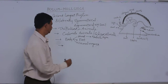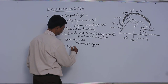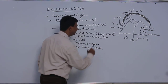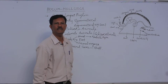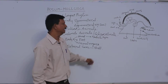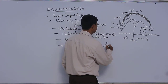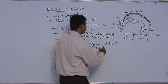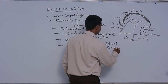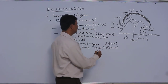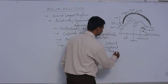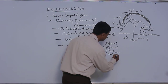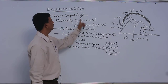The body is externally covered by a shell. This external cover is made up of calcareous material, which gives protection to the inner parts. The study of shells is known as conchology. In some animals, the shell is internal; in some, it is external; in some animals, the shell is reduced; and in some, the shell is absent. There are different types of shells present in Phylum Mollusca.